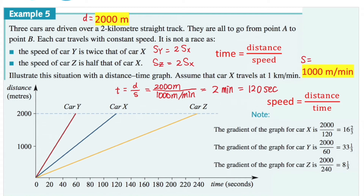Last example in this video: Example 5. Three cars are driven over a two-kilometer straight track, all going from point A to point B. Each car travels at constant speed — it is not a race. The speed of car Y is twice that of car X; the speed of car Z is half that of car X. This implies the speed of car X is two times faster than car Z. I've converted two kilometers and one kilometer per minute into meters, because it's easier to choose scales for the axes with larger numbers.